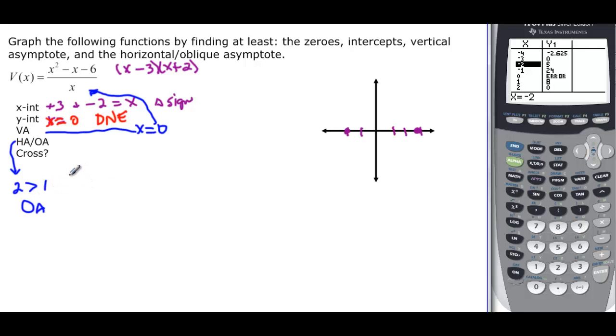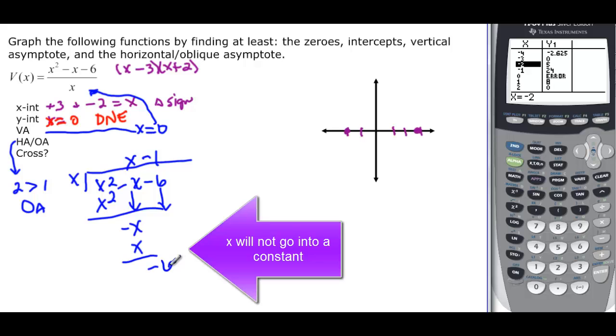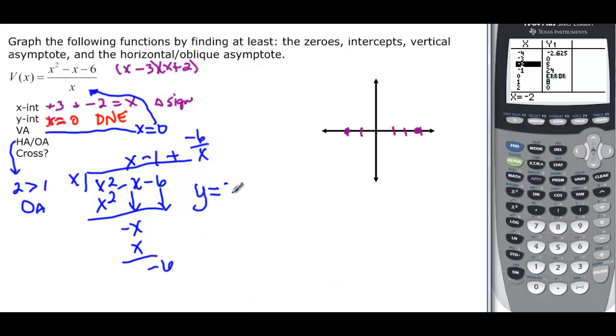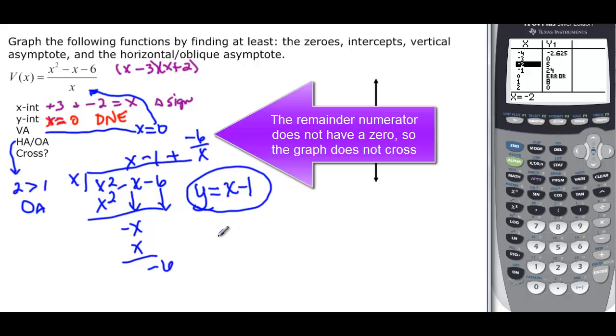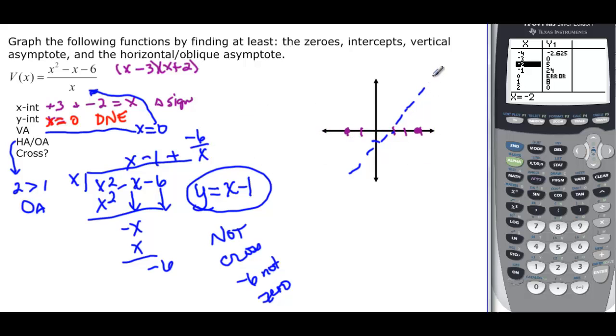So again, we have to divide. x goes into x squared minus x minus 6. This will be x. Bring down the negative x. That will be minus 1. Bring down the negative 6. And that's our remainder plus a negative 6 over x. So our oblique asymptote is y equal x minus 1. And there is no zero up here. It's just a negative 6, so it's not going to cross. So we have our x minus 1. It looks something like this is my oblique.